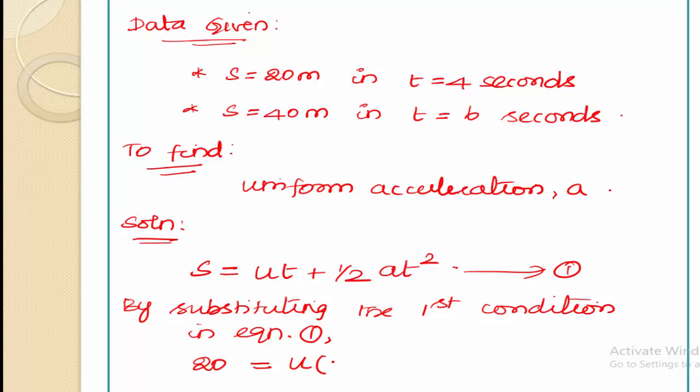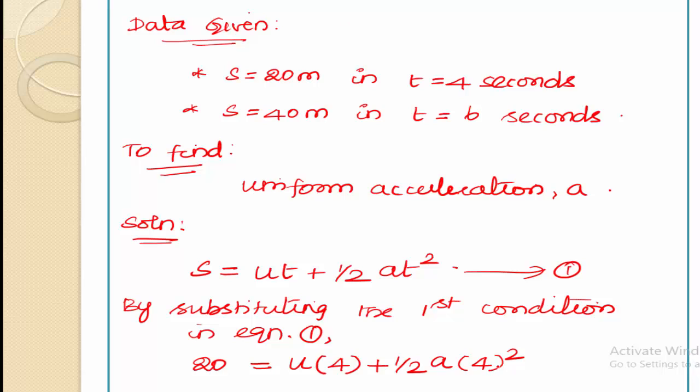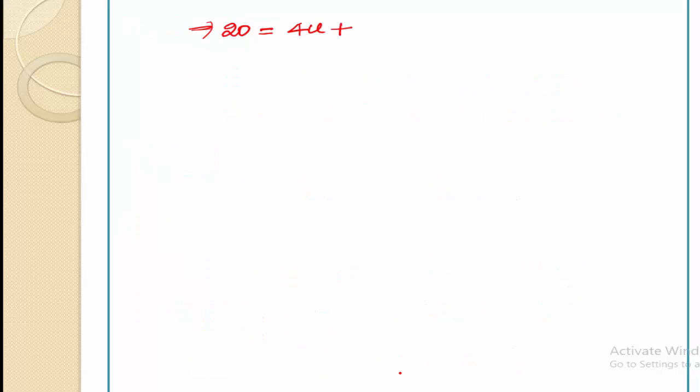The SI unit for time period is seconds, so no problem, t is 4 seconds. Plus half into a, the unknown acceleration, into 4 squared. So 20 is equal to 4u plus—4 squared is 16 divided by 2 is 8—so 8a. Keep this as equation 2.